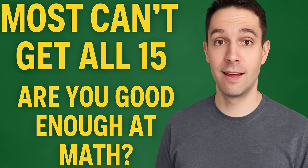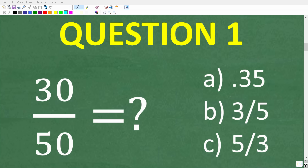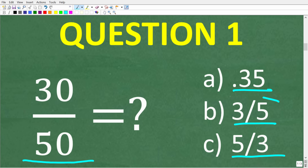Question number one: which is equivalent to the fraction 30 over 50? A: the decimal 0.35, B: the fraction three-fifths, or C: the fraction five-thirds. The correct answer is B, the fraction three-fifths, because we can factor out a 10 in both the numerator and denominator.